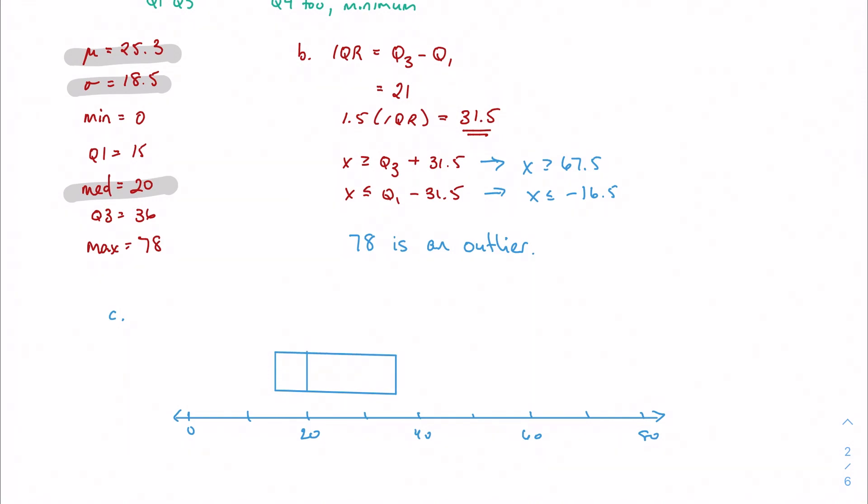And my two whiskers are my min and max. So my minimum is 0, my maximum is 78. So all the way up here somewhere. There we go. Close enough. And I'm going to go through and label my points. So 0, 15, 20, 36, and 78.